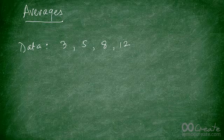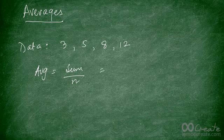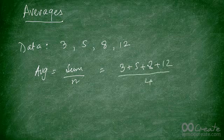We wish to figure out the average of this set of values. The average is always equal to the sum of all the values divided by the number of terms. So that's going to be 3 plus 5 plus 8 plus 12, divided by 4. The sum will be 28, and if you divide it by 4, you get an average equal to 7.